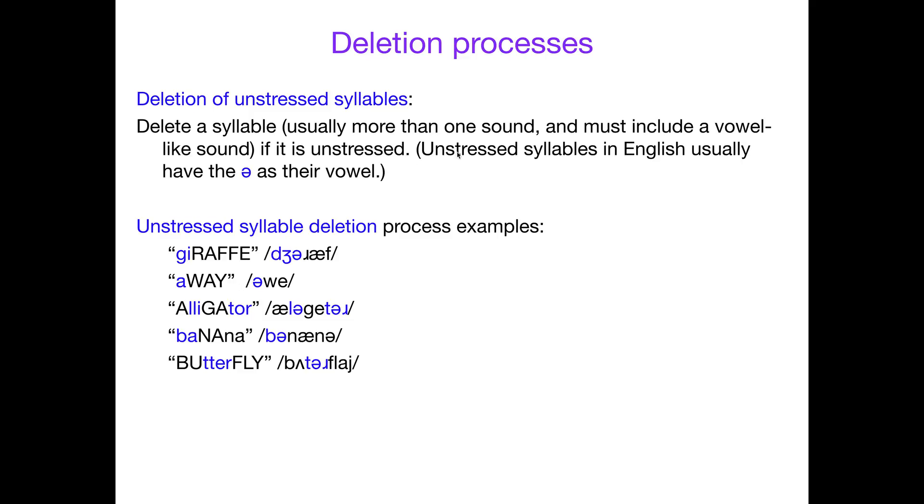But if you have unstressed syllable deletion happening, then you delete the entire syllable—everything associated with it. Not just a consonant, but the vowel as well. So giraffe, for example, would become raff. Away becomes way. Alligator: you dump both of these syllables and end up with age. Banana: if you dump the first one, you get nana, or if you dump both, you just get nah. And butterfly: if you dump that middle unstressed one, you get buffly. So these are deletion processes.